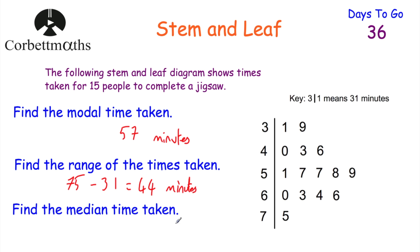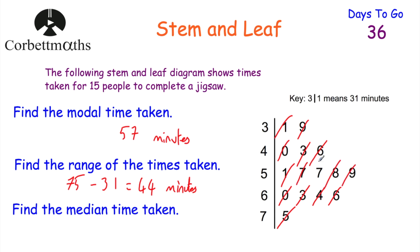For the median time taken, we cross off the shortest and longest, then the next shortest and next longest, continuing to eliminate pairs from both ends. After crossing off seven pairs we're left with 57 in the middle. So the median time taken is 57 minutes. If you got those answers, well done.